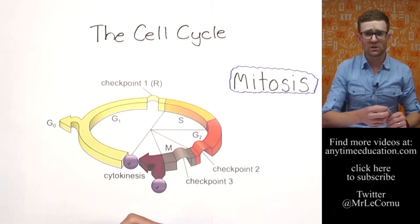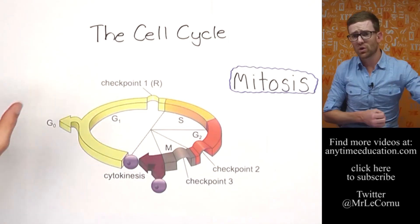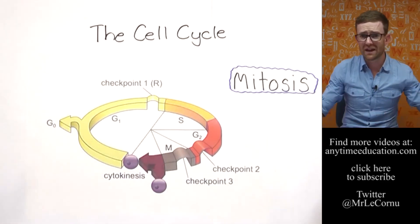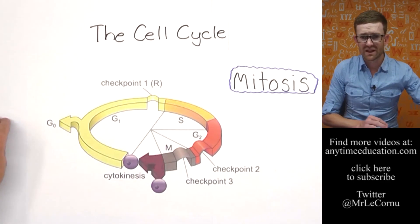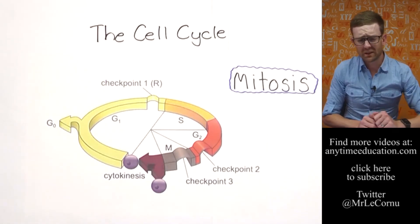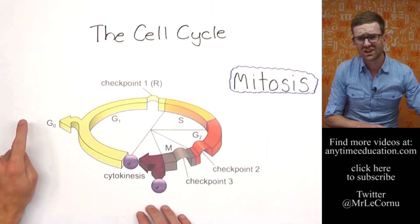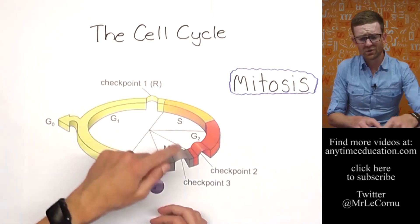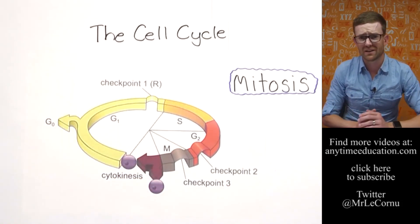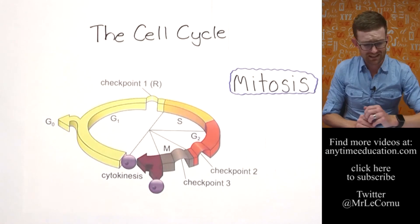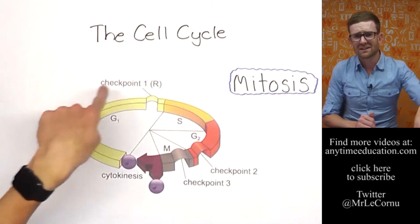But when a cell enters G naught, it specializes or differentiates into a particular type, for example a muscle cell or a skin cell or a brain cell or a nerve cell or a red blood cell or a white blood cell or a bone cell - you name it. That's what's happening at G naught. Typically when cells enter stage G naught, their cell cycle either slows down or stops altogether.